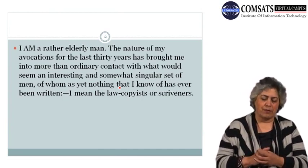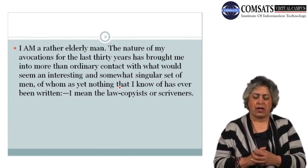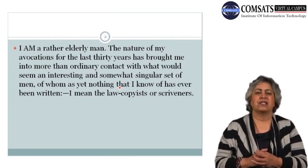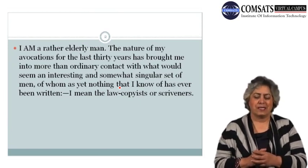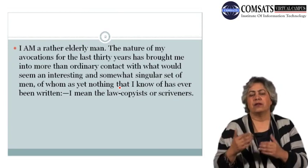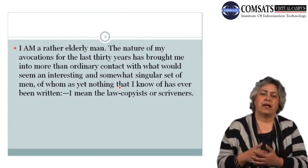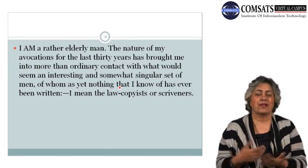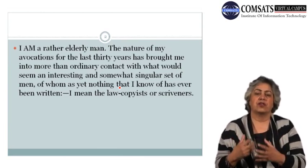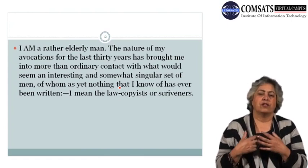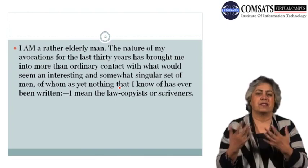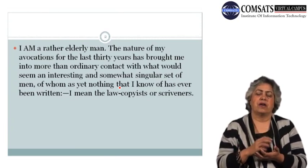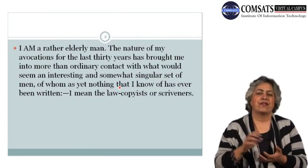The narrator starts off by saying: 'I am a rather elderly man. The nature of my avocations for the last thirty years has brought me into more than ordinary contact with what would seem an interesting and somewhat singular set of men, of whom as yet nothing that I know of has ever been written.' So up till the time that Melville planned to write the story, he says that this is a class of people — scribes, scriveners, or clerks — about whom nothing had been written.